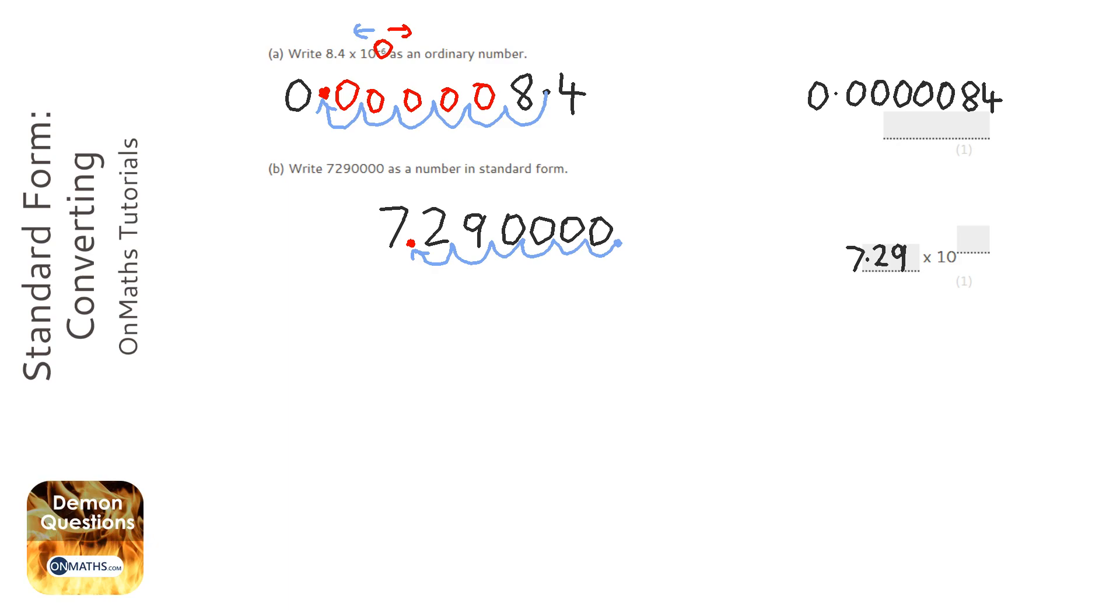On the previous one we had a small number, 0.00000084, and you can see that the power in the question was negative. So negative power of ten is really small number, positive power of ten really big number.